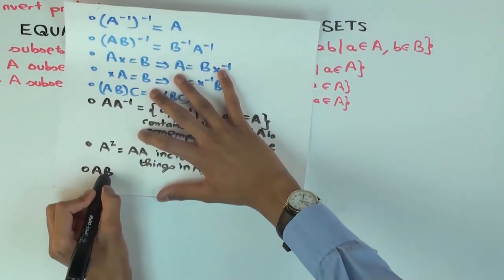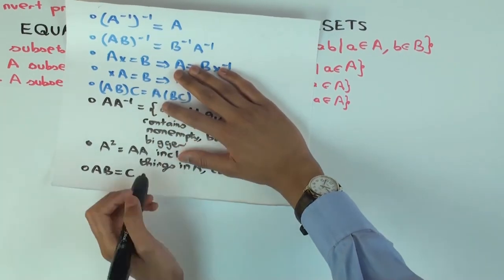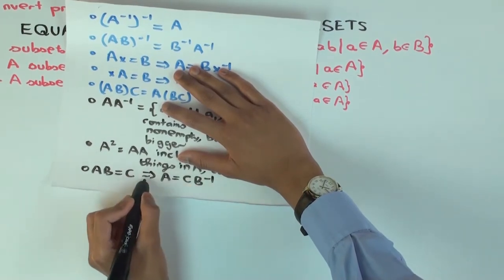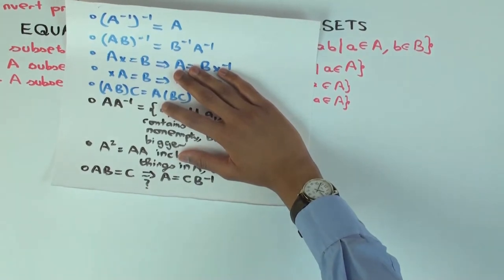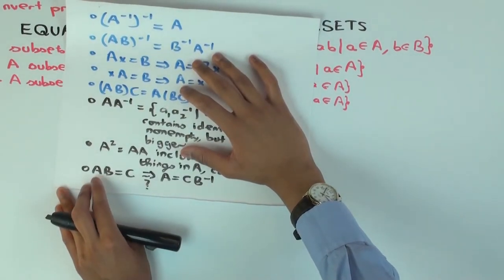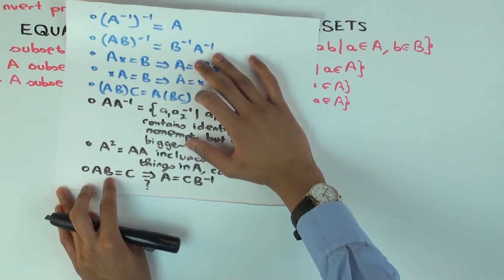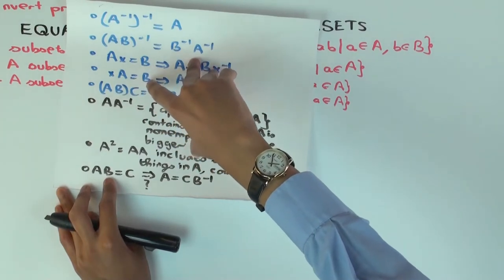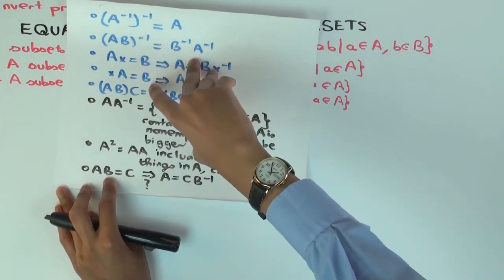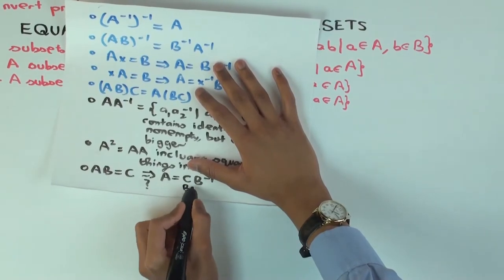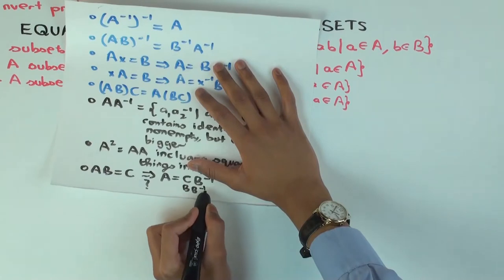Now, finally, suppose I give you A, B equals C. Can I use this to get A equals C, B inverse? Can I move the set on the right? Yes, you can. Well, how would you do it? How did we do it with elements? We said multiply both sides on the right by B inverse. Then you use associativity, which is fine. But then we said B, B inverse is the identity. But that's not true anymore. A set times its inverse is not necessarily just identity. So this is not necessarily true. Because the problem is that B, B inverse is bigger than the identity, could be, need not be the identity.